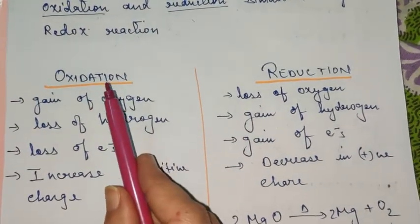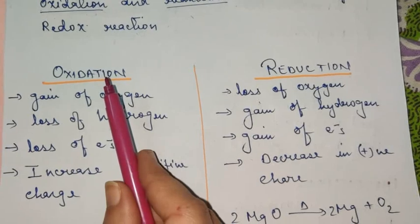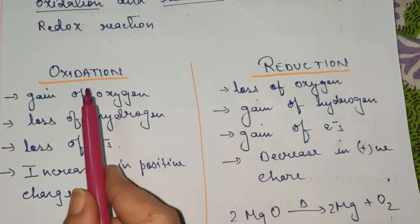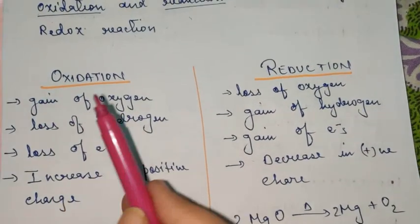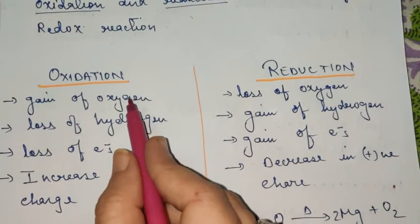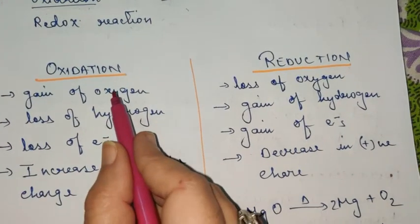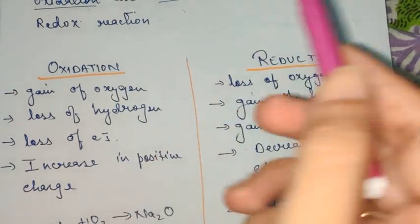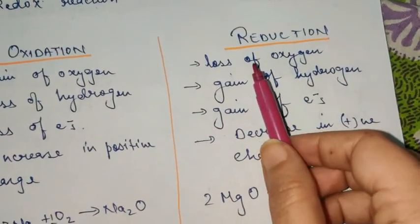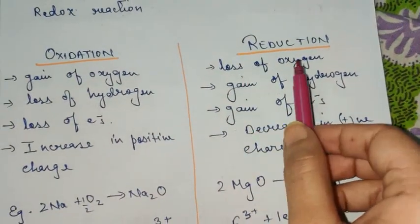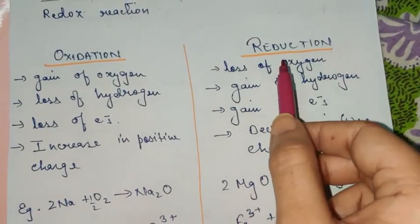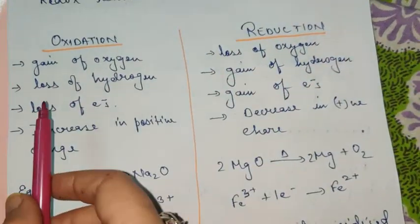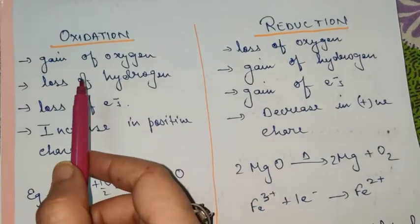What do you mean by oxidation? Oxidation means gain of oxygen — any reaction which proceeds by gaining oxygen is referred to as oxidation. And reduction means loss of oxygen — any reaction that proceeds by loss of oxygen is reduction.